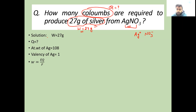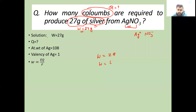According to Faraday's first law: W equals ZQ. Here Z is the equivalent weight divided by F (Faraday's constant).